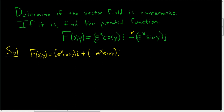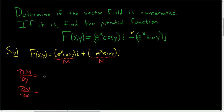Now we'll check to see if it is indeed a conservative vector field. This here is M, and this here is N. What we have to check is ∂M/∂y and also ∂N/∂x. So let's compute ∂M/∂y.